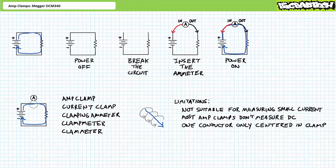First, amp clamps don't measure really small values of current very well, because the associated magnetic fields surrounding the current carrying conductor is very weak.